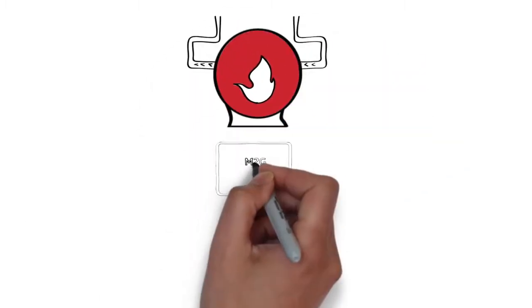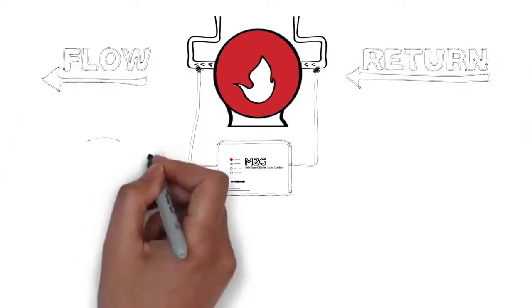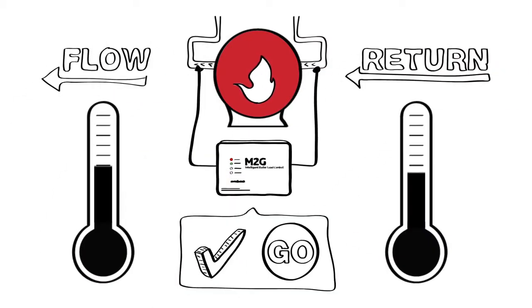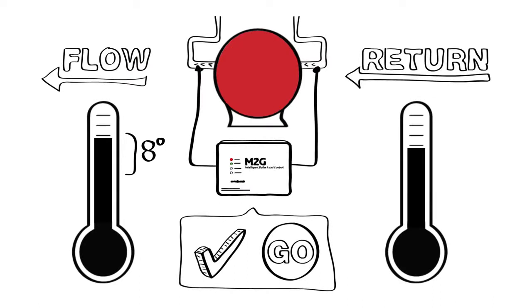M2G does this by measuring the boiler's temperature as the water flows out of the boiler and as it returns. As the boiler reaches its required temperature M2G takes a snapshot reading of the flow and return. From these readings M2G applies an 8 degrees dead band on the flow and a 3 degrees dead band on the return.